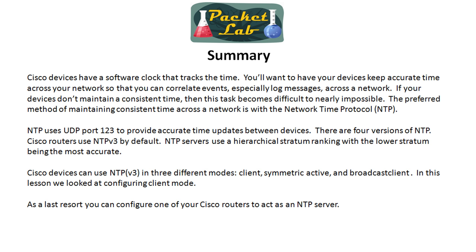If you remember your Jackson 5 song, NTP uses UDP on port 123, and it provides time in UTC. Cisco uses version 3 — so it all rhymes. It uses version 3 by default; there are four versions of NTP, with the newest being NTP version 4. NTP servers use a hierarchical stratum ranking for accuracy, with the lowest stratum being the most accurate. The atomic clock is stratum 0, the device directly connected to it is stratum 1, and devices further down the chain are stratum 2, stratum 3, stratum 4, and so on.